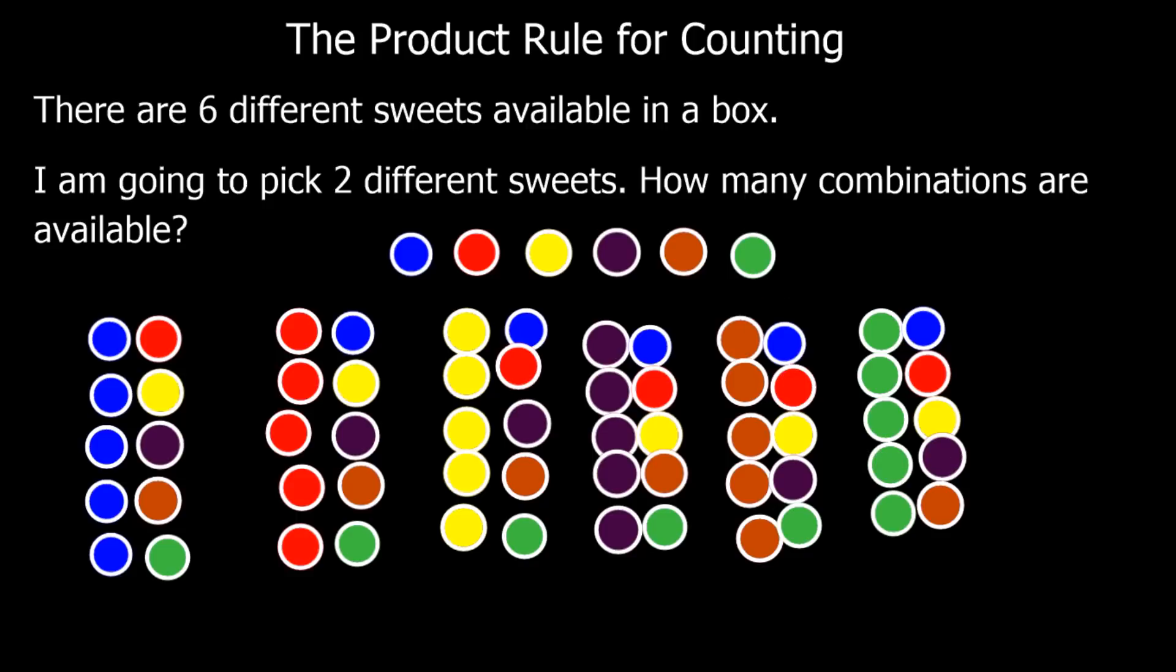So we can see there were six options for the first sweet. I could go for blue, red, yellow, purple, brown, and green. So there are six options. One, two, three, four, five, six. So six options for the first sweet. And then for each of those there were one, two, three, four, five options. So I do six times five and I get thirty. So there are thirty different options I've listed here,